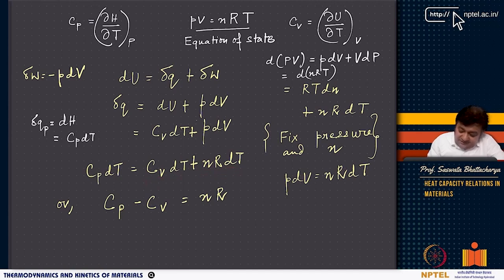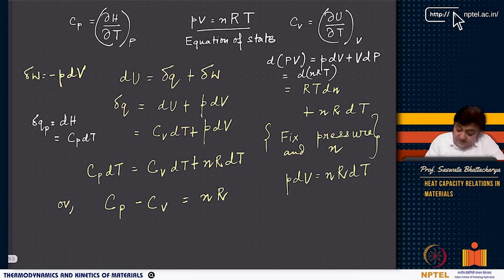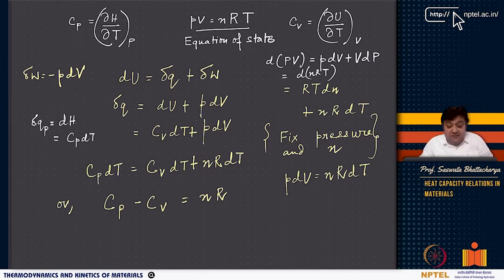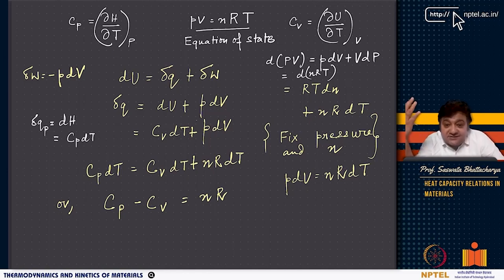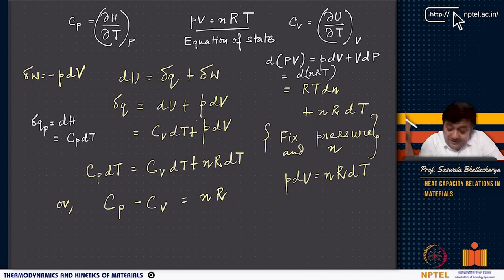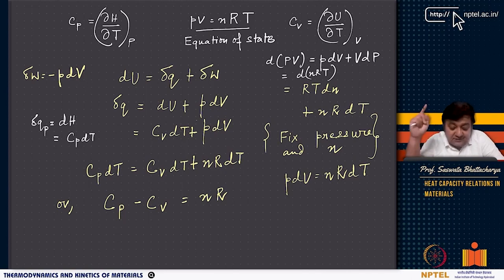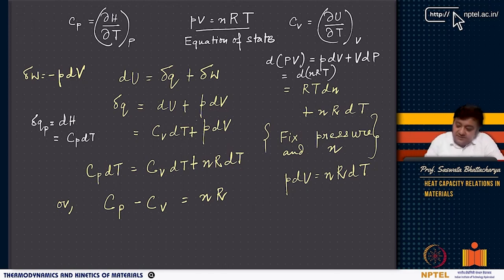Rearranging, Cp minus Cv equals NR, where N is the number of moles of the ideal gas. However, for non-ideal gases or any other substance, it becomes more complex. Knowing the definition of entropy or applying Maxwell's relations, which we will learn soon, will be useful there. The difference in heat capacities for an ideal gas is NR.